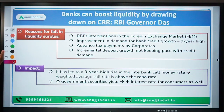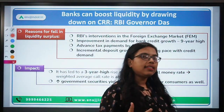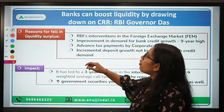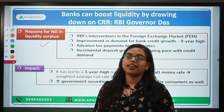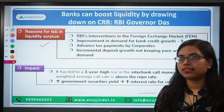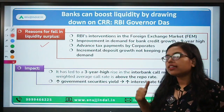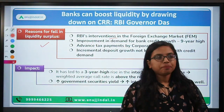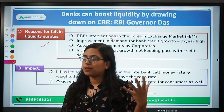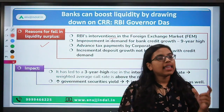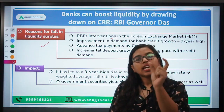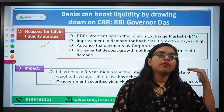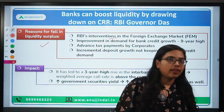Now let's talk about the reasons. The RBI governor is saying to use CRR and SLR. Let's first talk about the reasons for this fall in the liquidity surplus. Why are we facing a deficit or a fall in liquidity surplus? The first and foremost reason is RBI's intervention in the foreign exchange market. The rupee has been depreciating for a long time, and RBI has to intervene in the foreign exchange market in order to support the rupee so that it does not depreciate further.